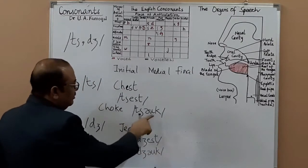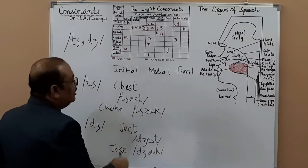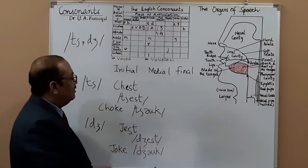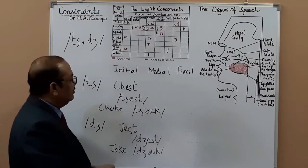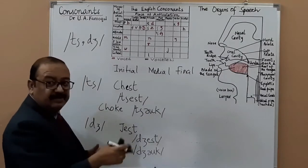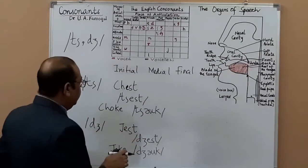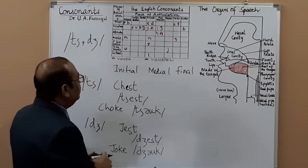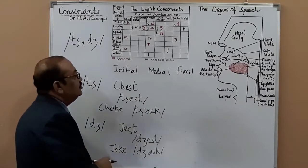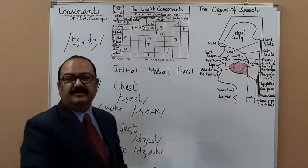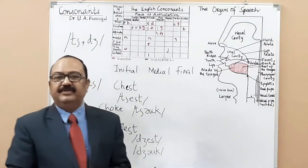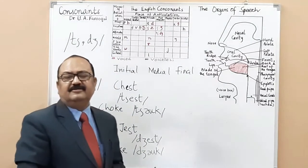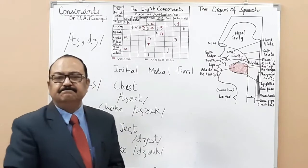The vowel in 'joke' goes with words like 'host' and 'most' — remember that? So this is the initial position covered. Now we come to the medial position. Where do we have CH medially? For example, 'teaching'.